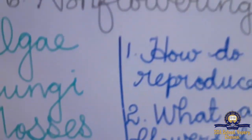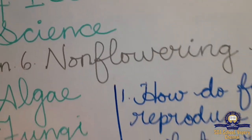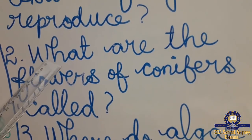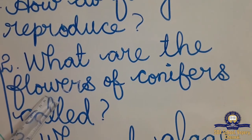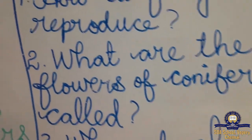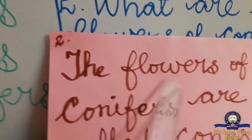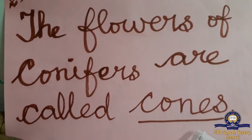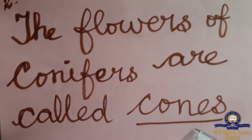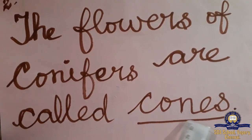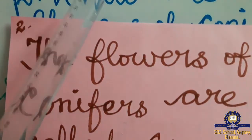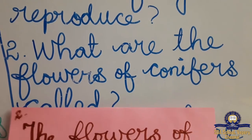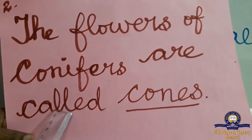Next, what are the flowers of conifers called? The answer is: the flowers of conifers are called cones — C-O-N-E-S. Very easily you can remember: conifers, cones. The flowers of conifers are called cones.